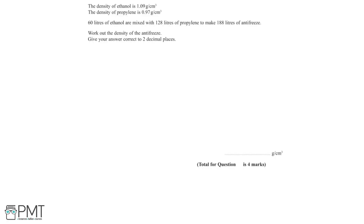In this question, we're told that the density of ethanol is 1.09 grams per centimetre cubed, and the density of propylene is 0.97 grams per centimetre cubed. 60 litres of ethanol are mixed with 128 litres of propylene to make 188 litres of antifreeze, and we need to work out the density of the antifreeze, giving our answer correct to two decimal places.